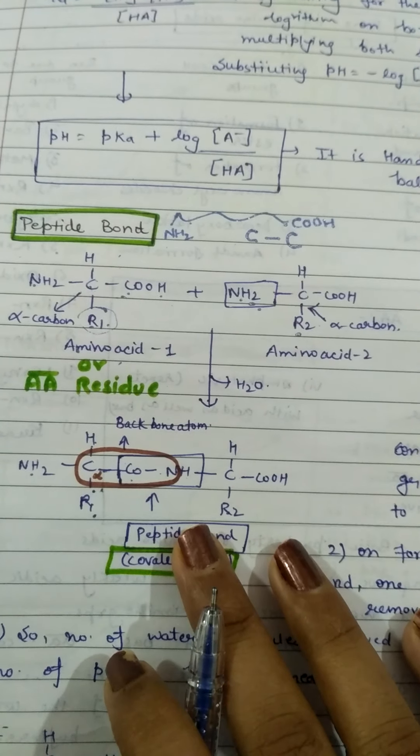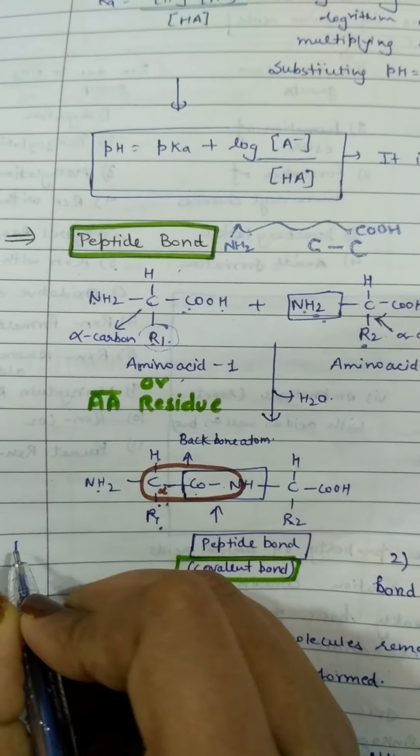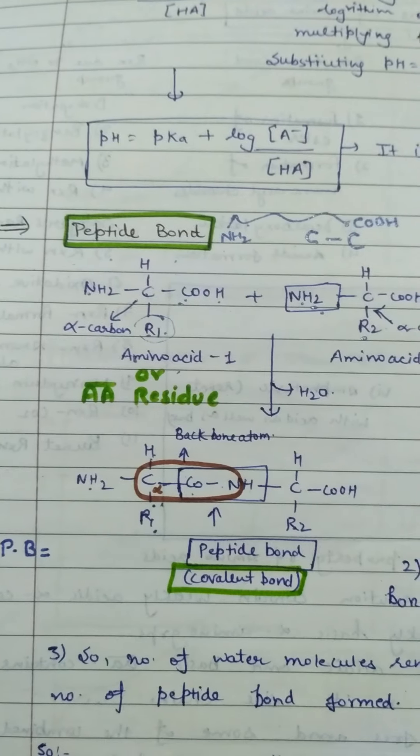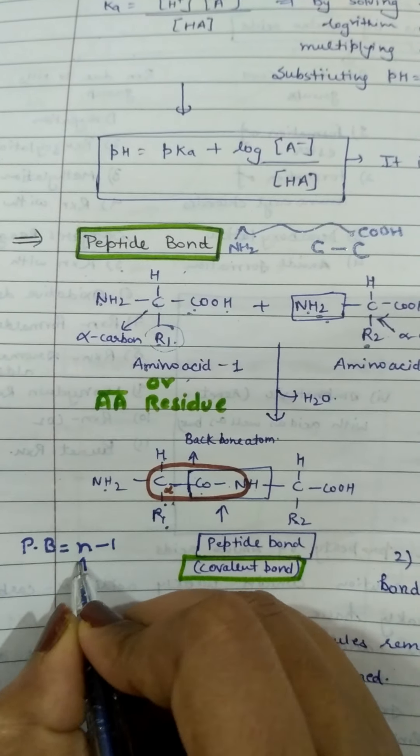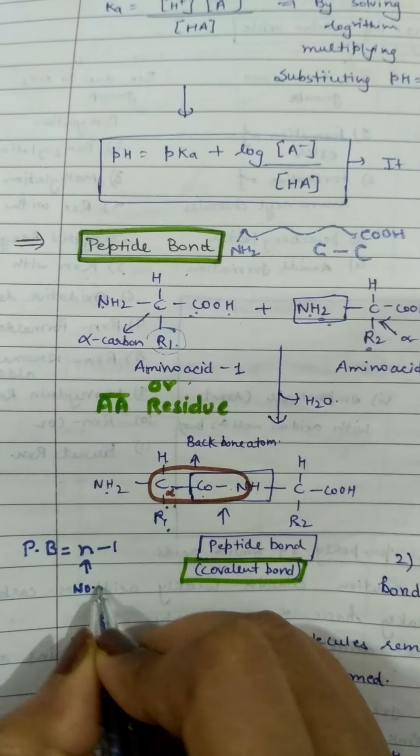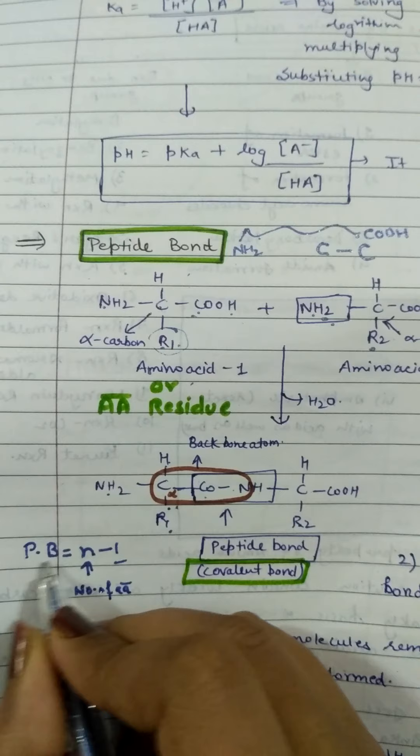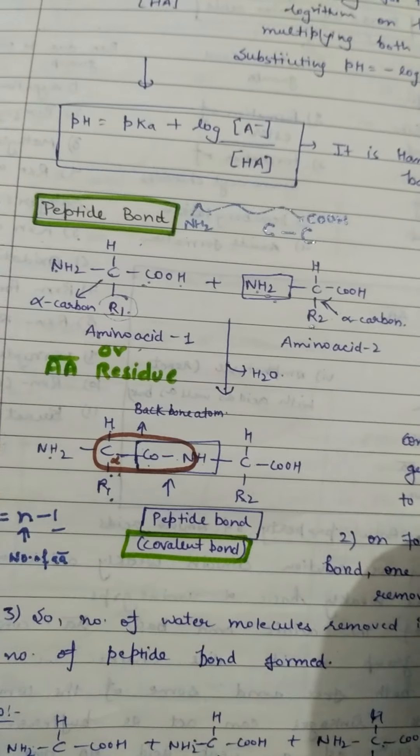This is the peptide bond, which is N-1. If you have N amino acids, the number of peptide bonds will be N-1. So this was about the peptide bond.